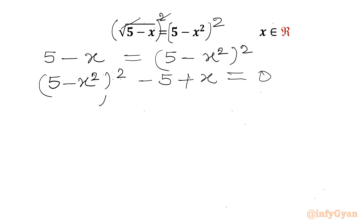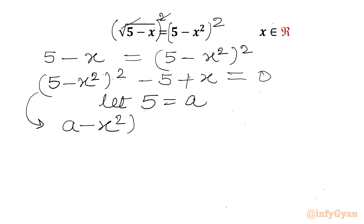Now I will use substitution. Let us say 5 equals A. So our equation in A and x will be (A minus x²)² minus A plus x equal to 0.